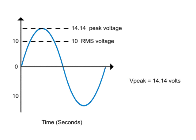You may also want to determine the RMS by dividing the AC peak value of 14.14 volts by 1.414 to get 10 volts or 10 RMS.